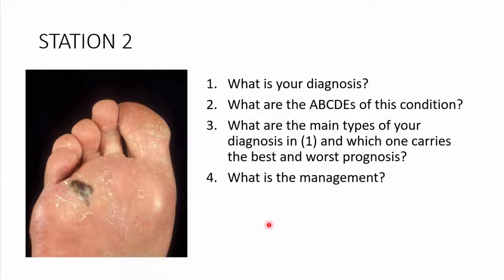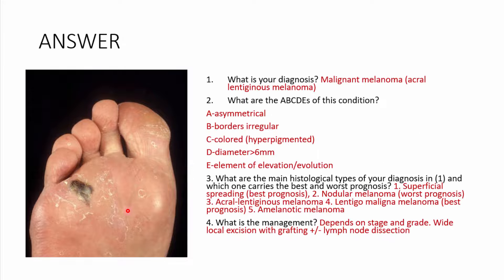Station 2: What is your diagnosis? What are the ABCDEs of this condition? What are the main histological types, which carries the best and worst prognosis, and what is the management? Study this image and give your answers. The answer: this is obviously a malignant melanoma — it's dark in color and is of the type acral lentiginous melanoma.